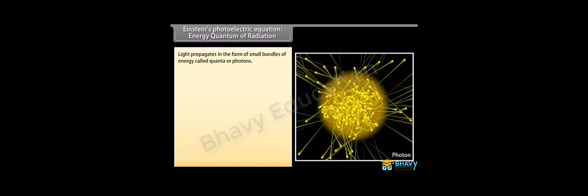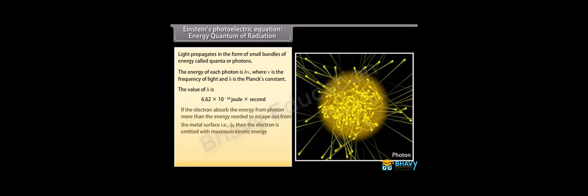Einstein's photoelectric equation: Light propagates in the form of energy packets called quanta or photons. The energy of each photon is hν, where ν is the frequency of light and h is Planck's constant, with value 6.62 × 10⁻³⁴ joule-second. If an electron absorbs energy from a photon greater than the energy needed to escape from the metal surface — that is phi-zero — then the electron is emitted with maximum kinetic energy Kmax, which equals hν minus phi-zero. This equation is known as Einstein's photoelectric equation.